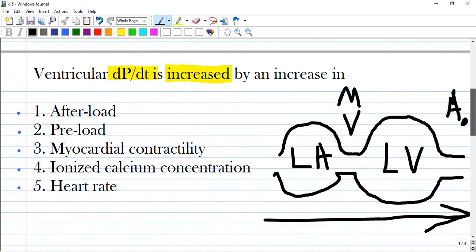So if you see this combination dP/dt, it means myocardial contractility itself. Which factors increase myocardial contractility?